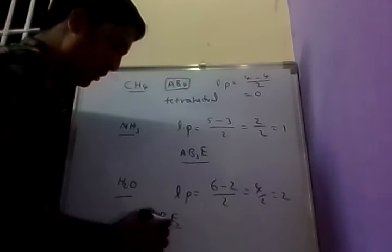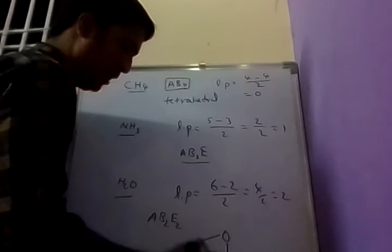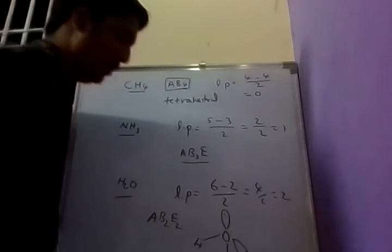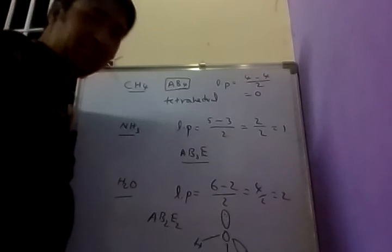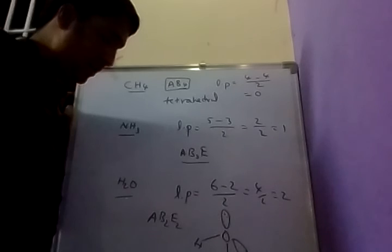In tetrahedral geometry, 2 lone pairs are present, so its shape changes to angular. Shape changes from tetrahedral to angular, V-shape, or bent shape.